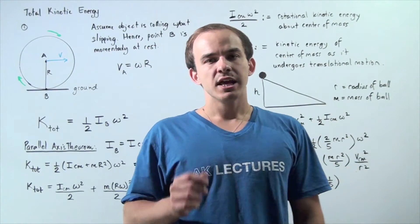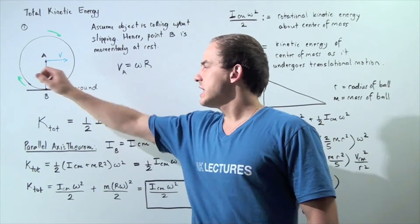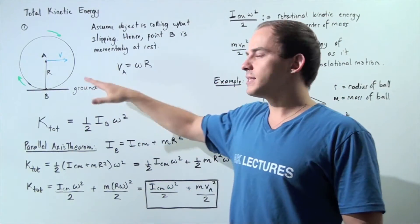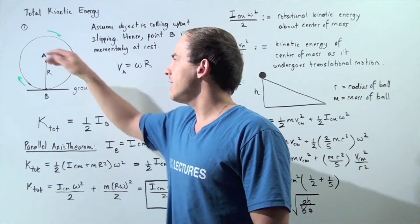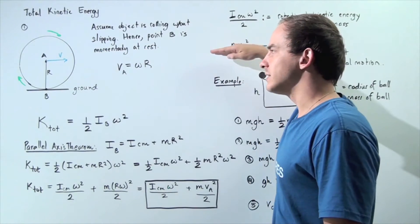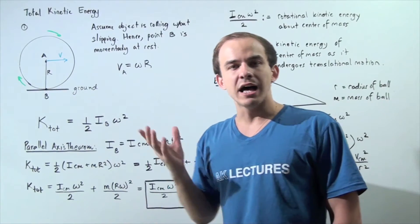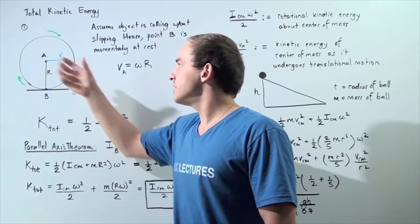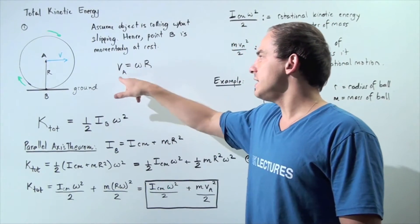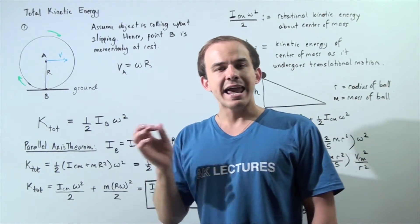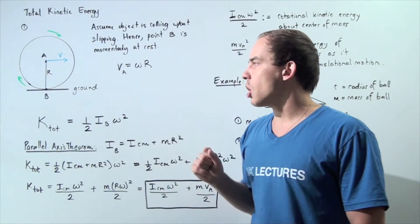Let's suppose that we have an object that is rolling without slipping. We have a wheel that is traveling along the ground. Because the object is translating, its center of mass found at point A is moving along a horizontal axis. That means the center of mass, point A, has linear velocity. The entire wheel has a linear velocity given by the equation: V_A is equal to omega, the angular velocity, multiplied by the radius r.